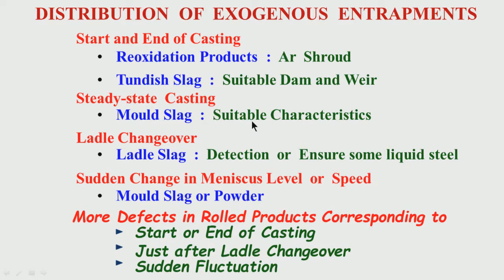During steady-state casting, as found in analyzed samples, there is still a possibility of mold slag entrainment. Unlike unsteady-state casting where fluctuations occur due to changes in casting speed, steady-state casting can also see mold slag entrainment if the powder characteristics — viscosity and interfacial tension — are not suitable. At the time of ladle changeover, there is a possibility of ladle slag getting into the tundish and subsequently getting entrained in the liquid steel and entering the mold during casting.